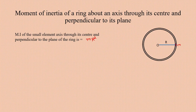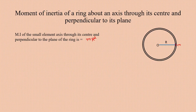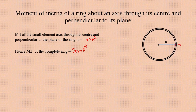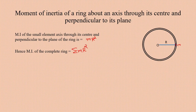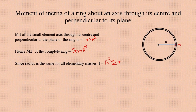We divided the ring into very small elements. The moment of inertia of the entire ring equals the summation: Σ(m·R²). Since the distance R is the same for all elementary masses, we can take R² outside the summation: I = R² · Σm. Since Σm is the total mass M of the ring, the moment of inertia of the ring is I = MR².